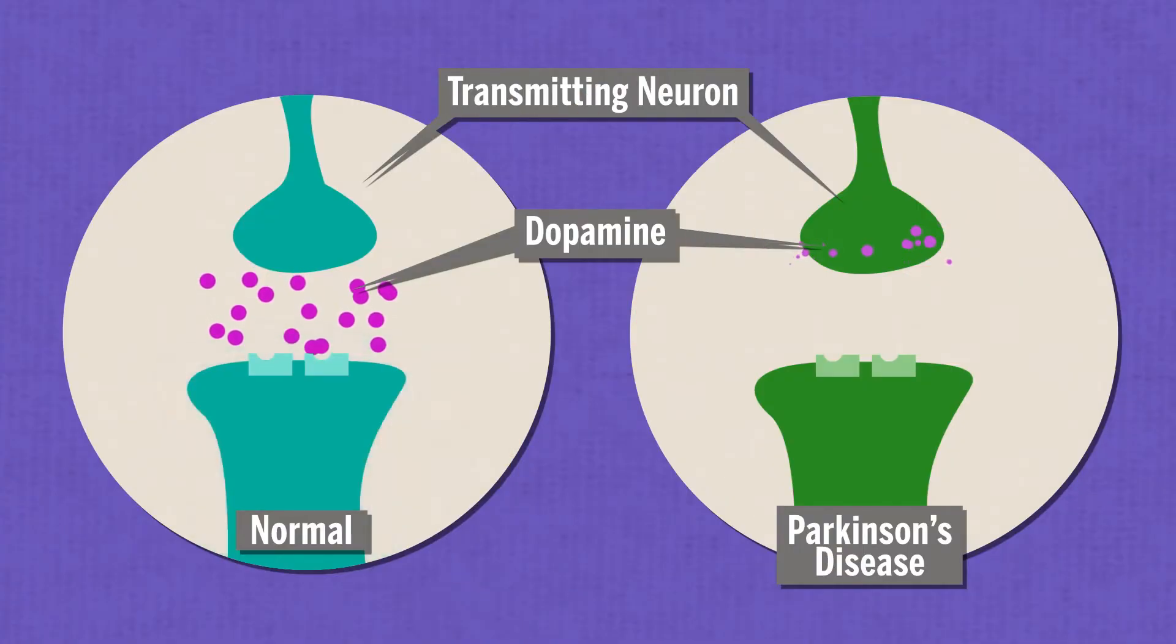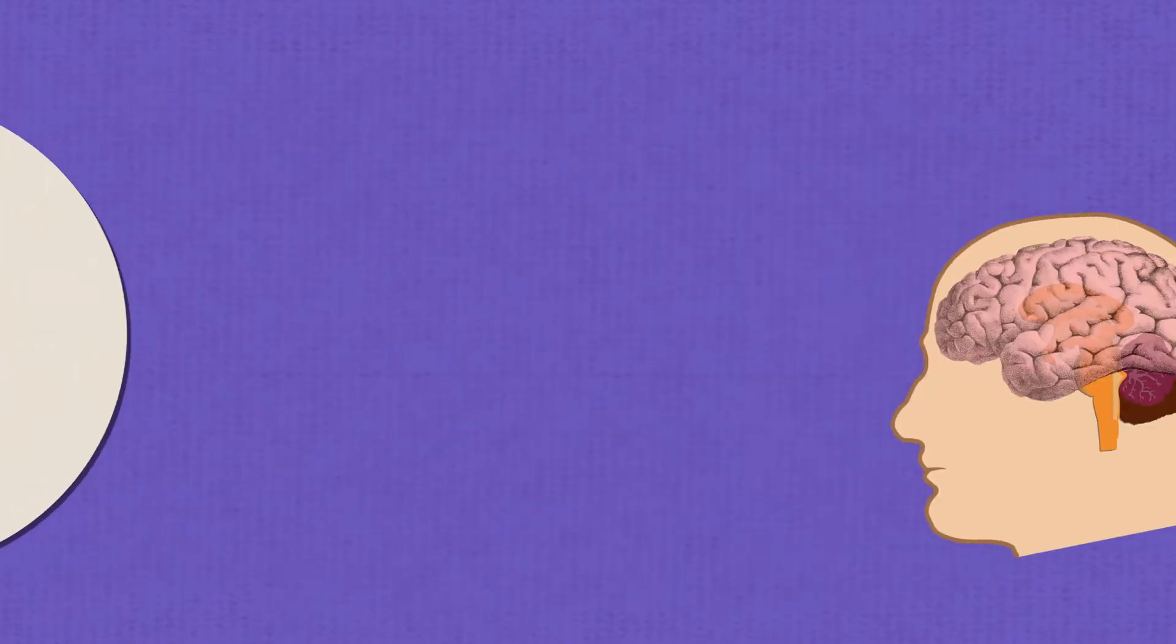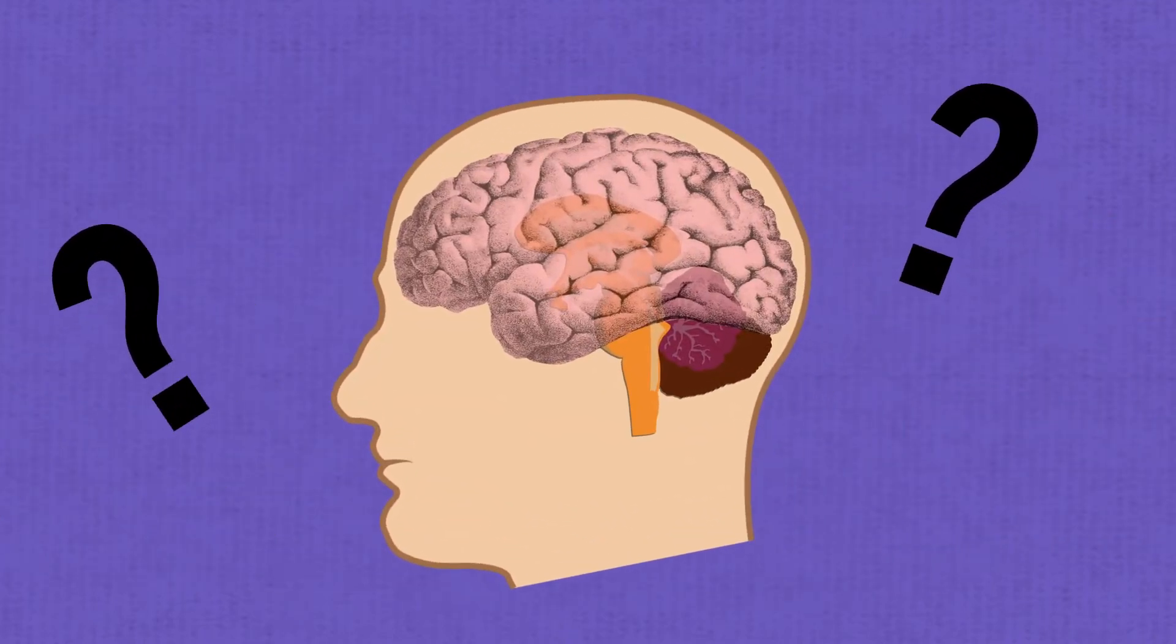Dopamine is important because without it, people develop Parkinson's disease. But how does dopamine work in the brain? We don't really understand.